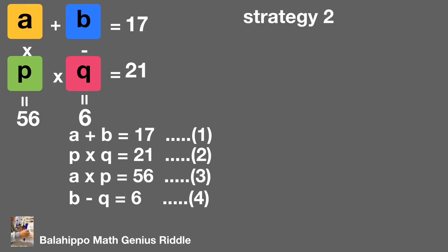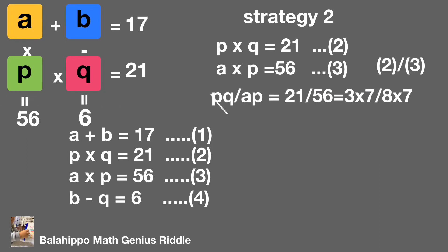Strategy 2: we take equation 2, P times Q equal to 21, and equation 3, A times P equal to 56. Equation 2 divided by equation 3, we get A equal to 8Q over 3. We add this as equation 5.